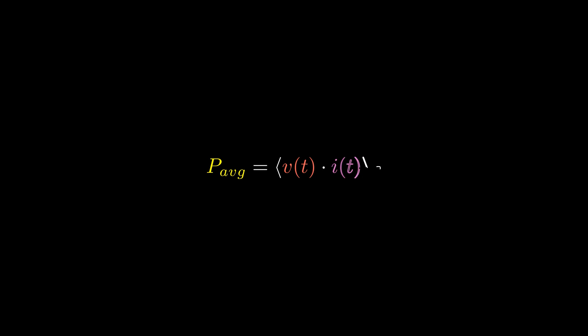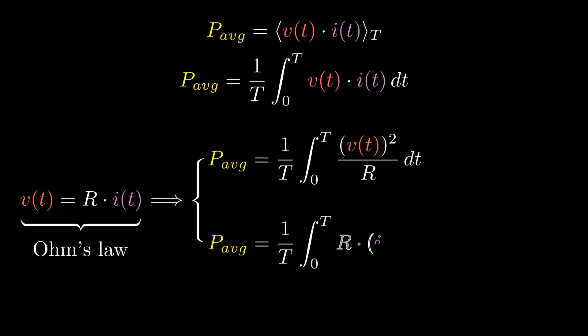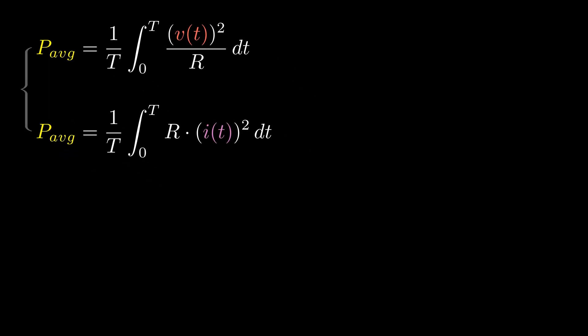The average power is the average of voltage times current during some period of time T. The formula for average values is the integral from zero to T divided by T. Ohm's law states that voltage is equal to resistance times current. So let's replace current by voltage divided by R on one side and then replace voltage by current times R on the other side.